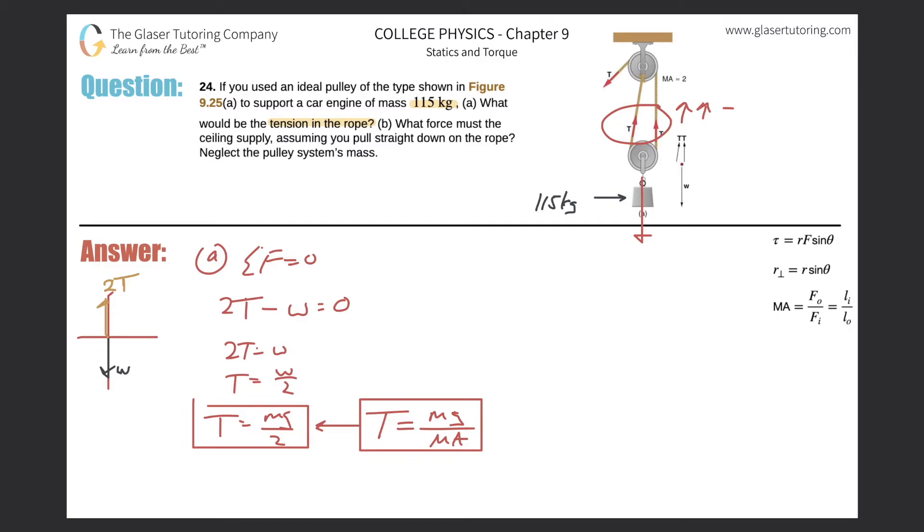So now for this problem, all we have to do is plug in the values. The tension will be equal to the mass of the engine, which is 115 kilograms, multiplied by gravity of 9.8, all divided then by the mechanical advantage, which was 2. Let's plug it into the calculator: 115 times 9.8 divided by 2, and we get a value, considering sig figs and rounding, 564 newtons. That takes care of letter A.